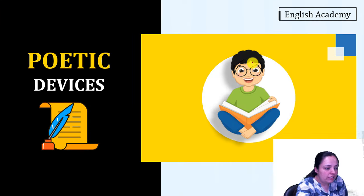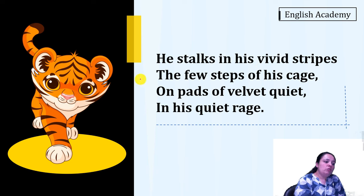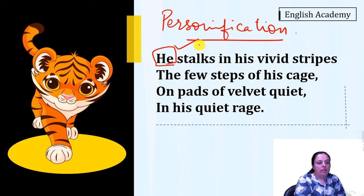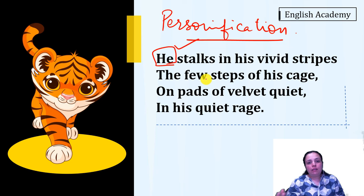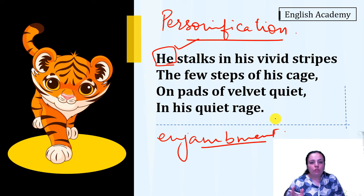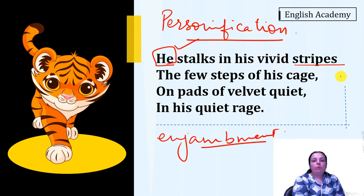Now we look at the poetic devices used in this poem. Throughout the poem we see personification — the tiger has been personified when the poet refers to him as 'he,' 'him,' and 'his,' giving the tiger human qualities. We also see the use of enjambment, a poetic device in which a sentence continues onto the next line with no punctuation mark at the end of the line, showing an urgency in the poet's expression.